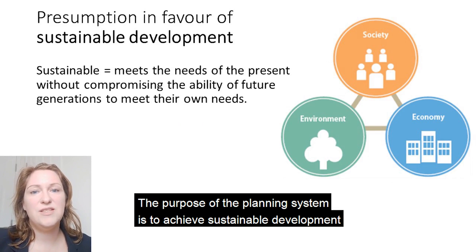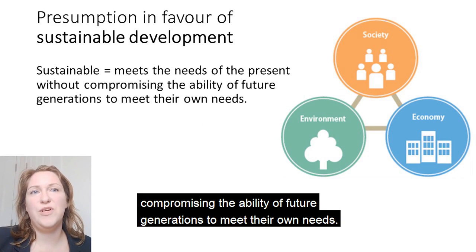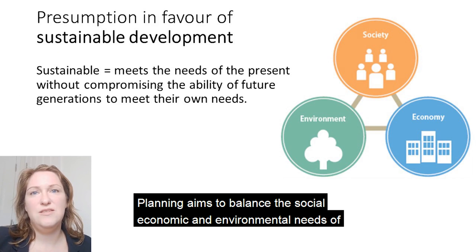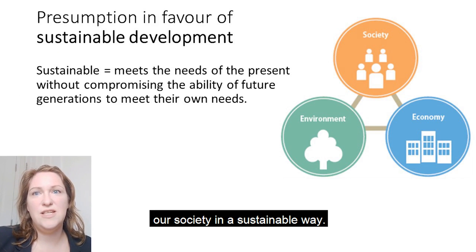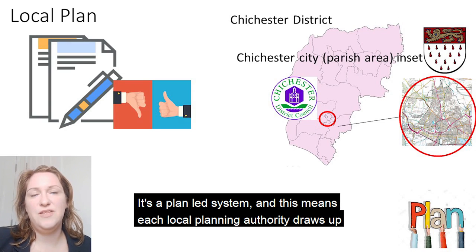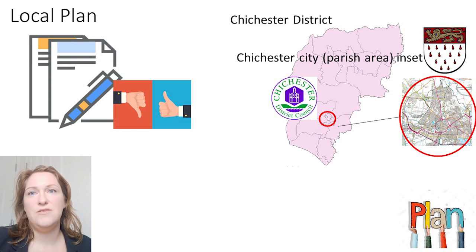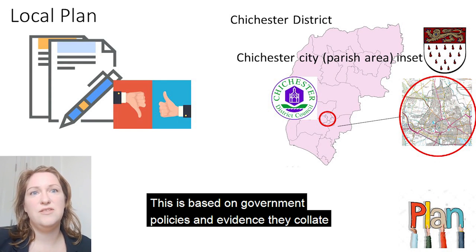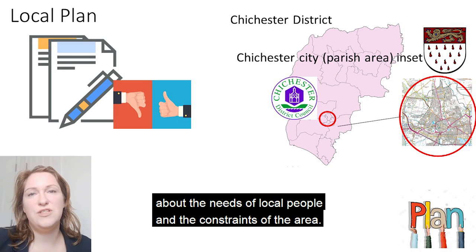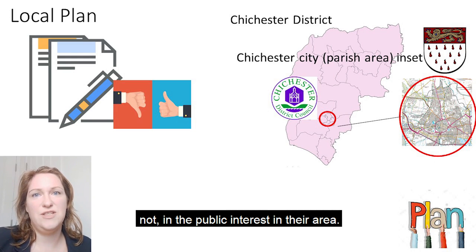The purpose of the planning system is to achieve sustainable development, and sustainable is defined as meeting the needs of the present without compromising the ability of future generations to meet their own needs. Planning aims to balance the social, economic and environmental needs of our society in a sustainable way. It's a plan-led system and this means each local planning authority draws up a local plan with policies about what types of development is or is not in the public interest and where. This is based on government policies and evidence they collate about the needs of local people and the constraints of the area. These planning policies are evidence-based statements of what is or is not in the public interest in their area.